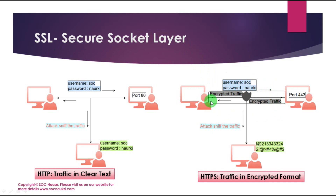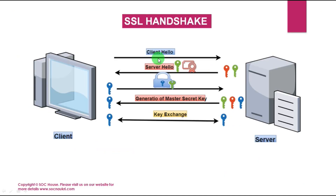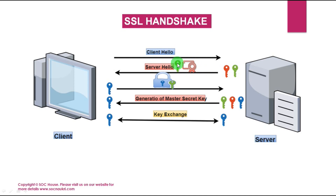The SSL handshake is initiated from the client machine. The client sends a hello message to the server, which includes the SSL version number, supported encryption algorithm, and some session-specific data. The server sends a hello back to the client, which includes the SSL version number and the server's signed certificate containing the public key for data encryption and the supported encryption algorithm.